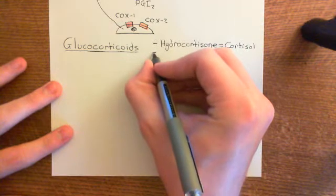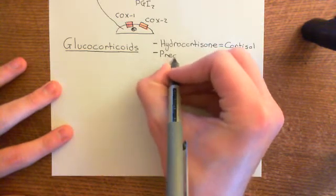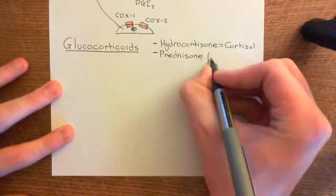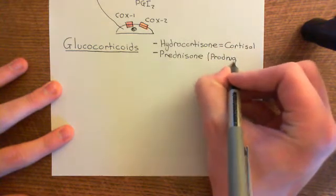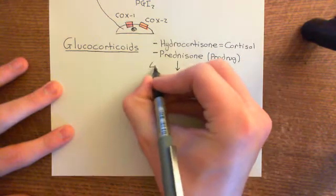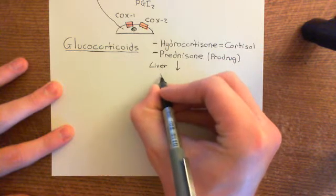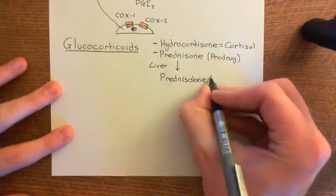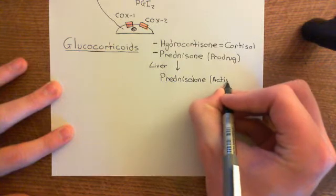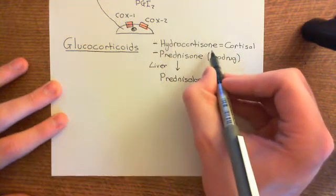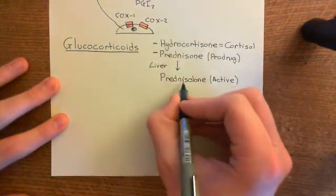Another example of a glucocorticoid is prednisone. Now prednisone is not an active drug — it's what is known as a prodrug. It's given to someone; however, to actually have an effect within the body, it needs to be metabolised within the liver and converted into the active drug, which is known as prednisolone. So prednisolone is the active drug and will go on to have the glucocorticoid effect. Hydrocortisone is already active and doesn't need to be activated.